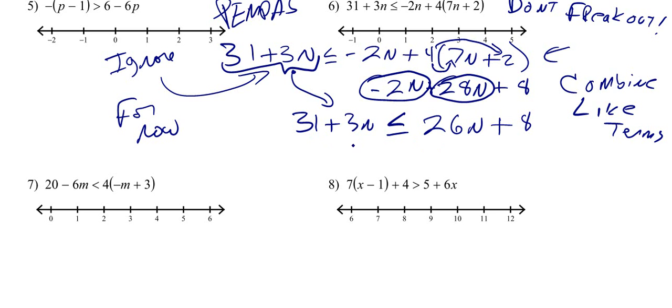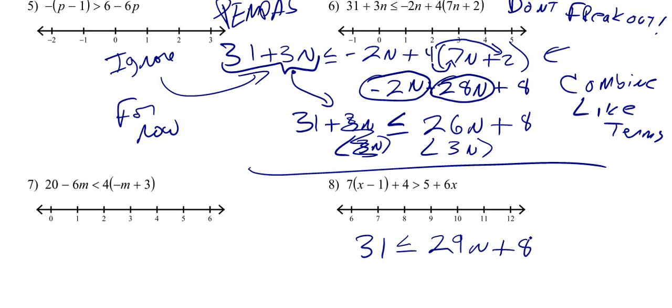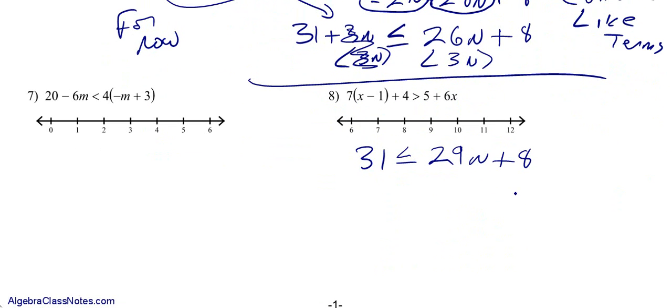Our question now is what side do we want our variable on? Since we like to work with positive coefficients, we're going to subtract 3n from both sides. So all that's left on this side is just the 31. We know 31 is less than or equal to 23n plus 8. Now subtract 8 from both sides. So we got 23 is less than or equal to 23n. Divide both sides by 23.